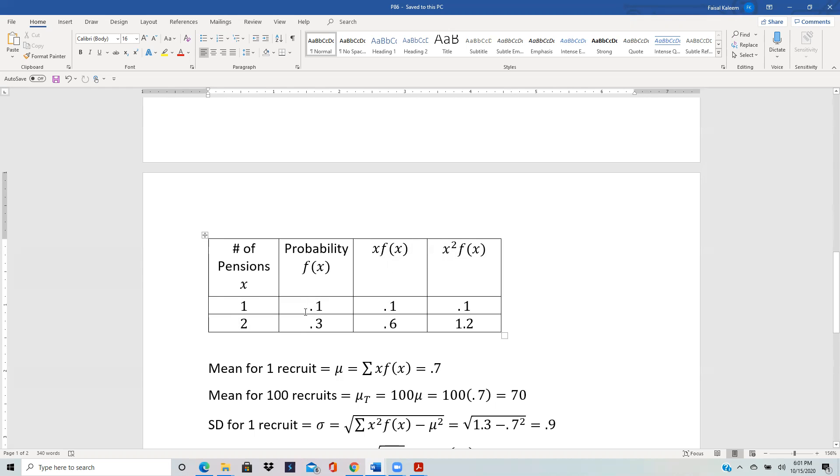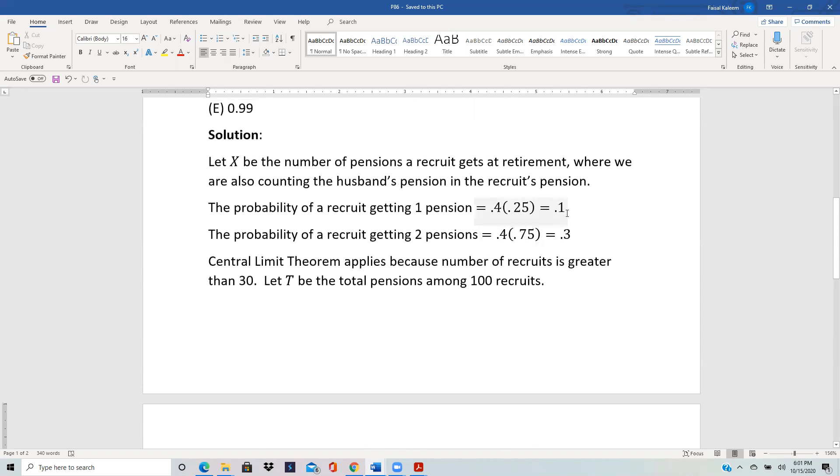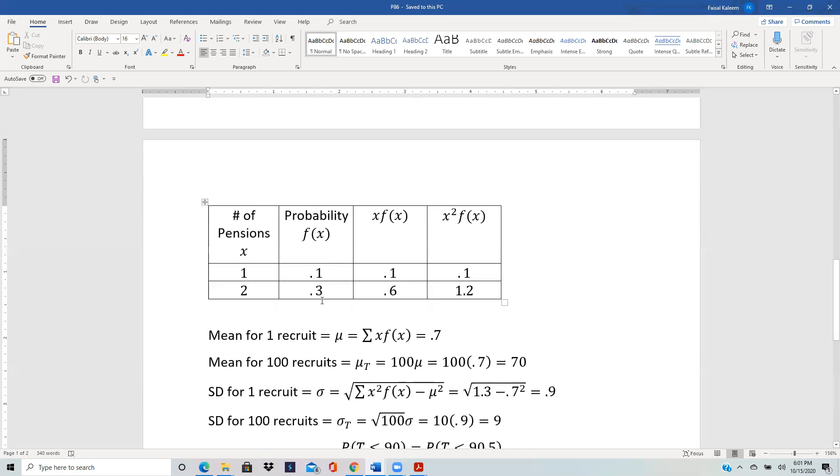One pension, as we calculated above, is 0.1, and two pensions is 0.3. So the product of x·f(x) is here in this column, and then when you add up this x·f(x), you get the mean or the expected value of pensions, and that's for one recruit, so that's 0.7.